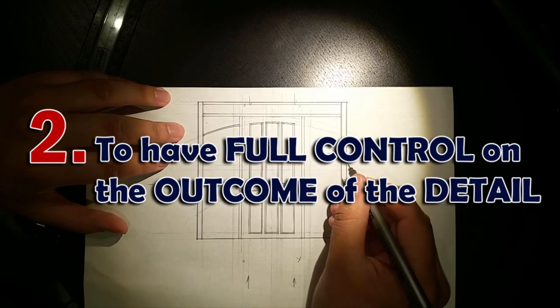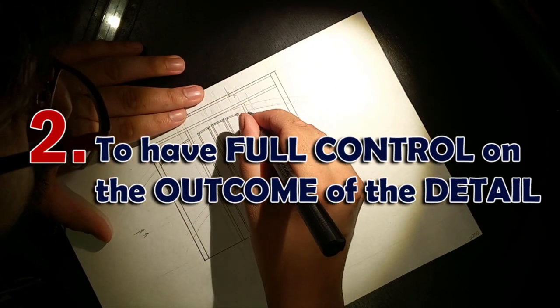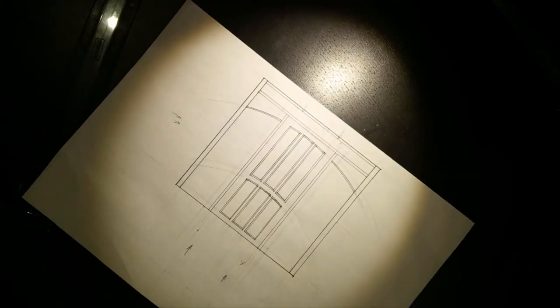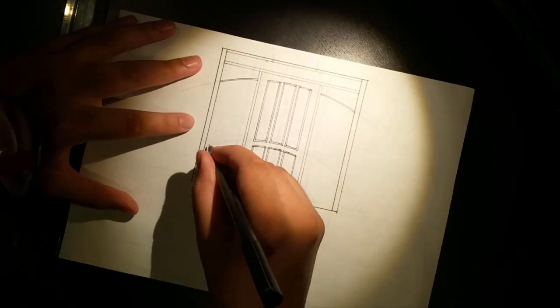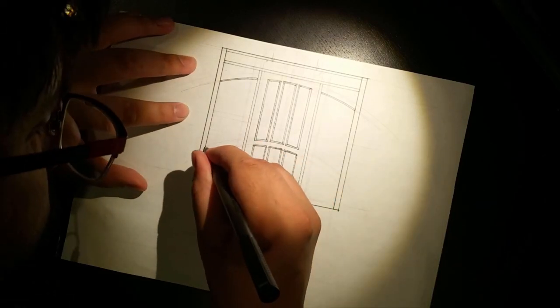Reason number two. The next reason is absolute control. When I draw something with lines and add hatch patterns however I want I have complete and total domination over the outcome of the drawing.